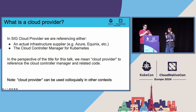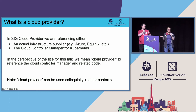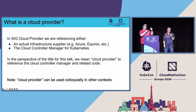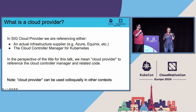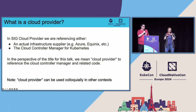So what is a cloud provider? It's an overloaded term. We're not referring to cloud providers like Azure, Google, or Equinix Metal in the general sense. Here we're talking about two things: the specific cloud provider infrastructure manager component used by providers like Azure or Equinix Metal — like cloud-provider-equinix-metal, cloud-provider-azure — and the cloud controller manager, which is the shared component that all those individual vendor ones use.